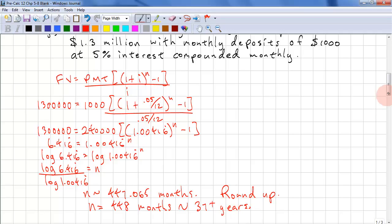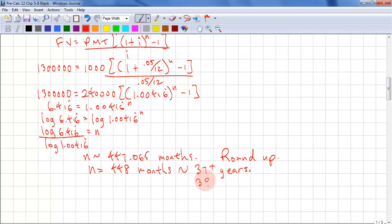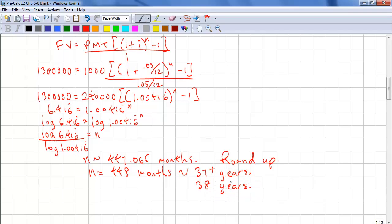You need to round up because 447 months is not quite enough to get 1.3 million. So this is 448 months, and this is roughly 37 plus years. If you wanted your answer in years you would have to round up again. This would be 38 years. So if you want to save for retirement and want 1.3 million dollars, investing a thousand dollars a month, you're going to need 38 years. So you got to start early.